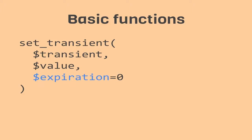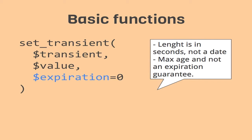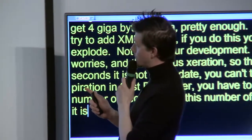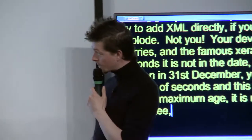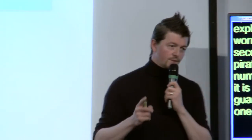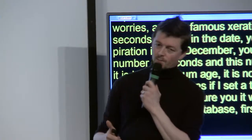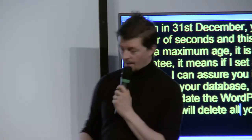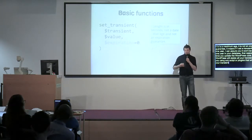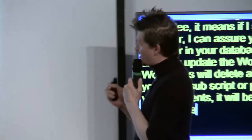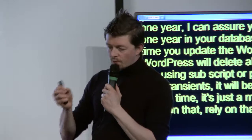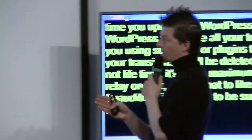And the famous expiration parameter: the length is in seconds, not a date. You can't tell it to expire on December 31st - you have to add a number of seconds. And this number of seconds is a maximum age, not an expiration guarantee. If I set a transient for one year, I can assure you it won't stay one year in your database. First reason: each time you update your WordPress core, WordPress will delete all your transients. If you're using scripts or plugins that flush your transients, it will be deleted before. So it's not a lifetime - it's just a maximum age. It's not a cron. If you want to be sure your data will stay in your database, don't use transients - use an option.